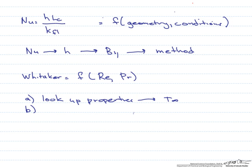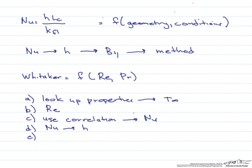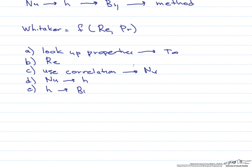From the properties at T infinity, we solve for the Reynolds number. Once we have the Reynolds number, we use the Whitaker correlation to solve for the Nusselt number. From the Nusselt number we find the convective heat transfer coefficient h, then use h to find the Biot number, which tells us what method to use to solve for time.